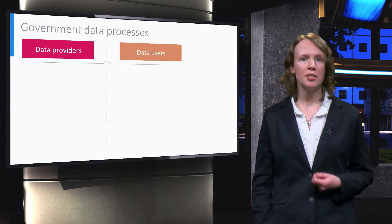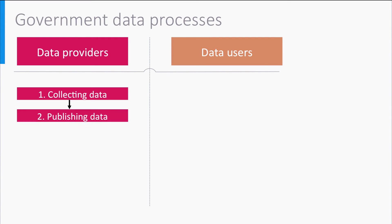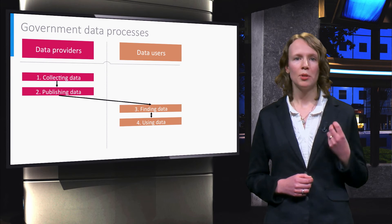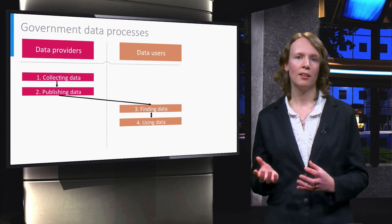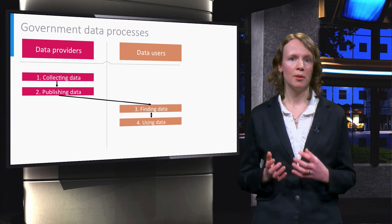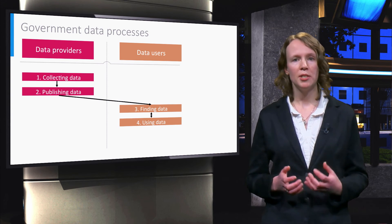Data interpretation is very important for each of these steps of open data use. For instance, in order to analyze or combine open datasets, the user needs to be able to interpret the data and to understand the context in which it has been created. In sum, we just explored four basic processes: collecting data, publishing data, finding data, and using data. Too often, governments focus on publishing but not on learning from the usage, which in turn can result in improvements of, for instance, the governmental publishing process.